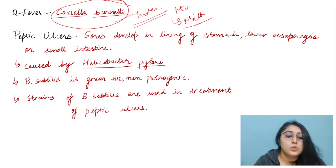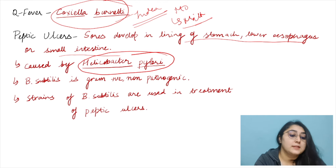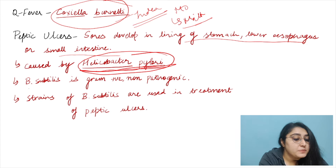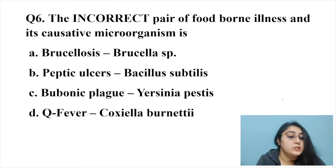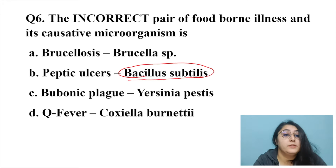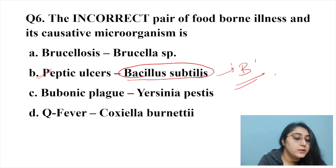Peptic ulcers develop in the lining of the stomach, lower esophagus, or small intestine and are caused by Helicobacter pylori — a gram-negative bacterium. However, the question pairs peptic ulcers with Bacillus subtilis, which is gram-positive, non-pathogenic, and actually used in the treatment of peptic ulcers. Therefore, peptic ulcer paired with Bacillus subtilis is the incorrect pair — option B is the correct answer.